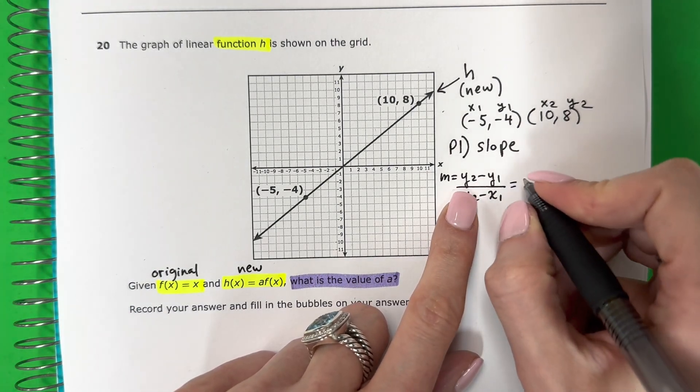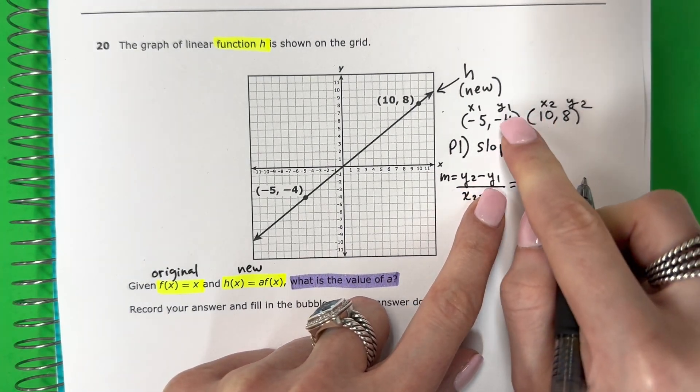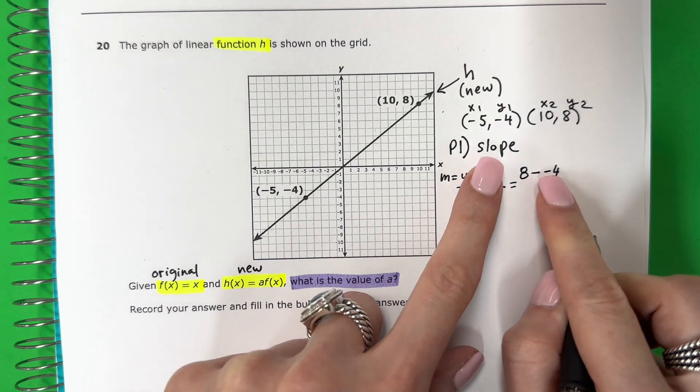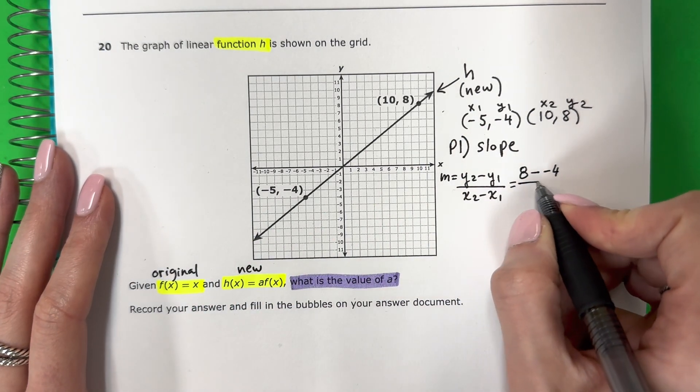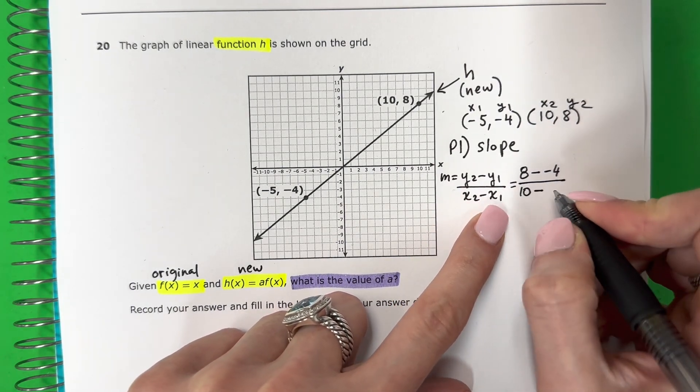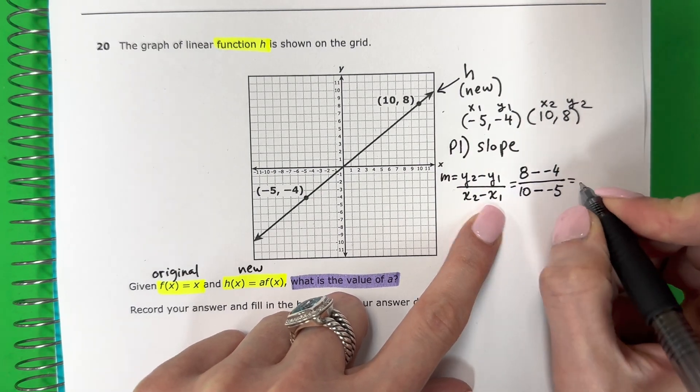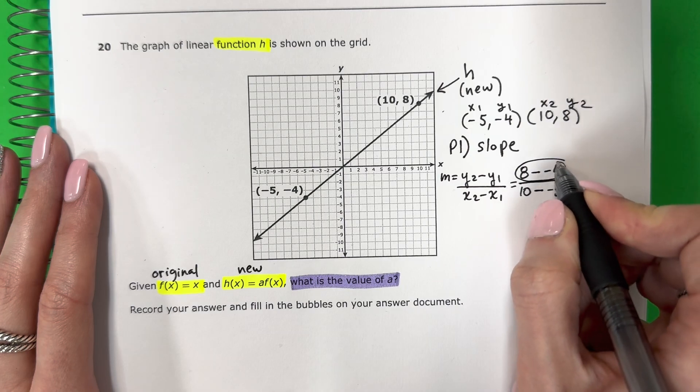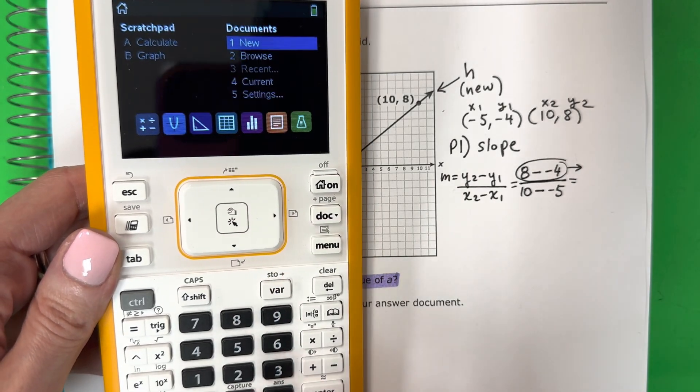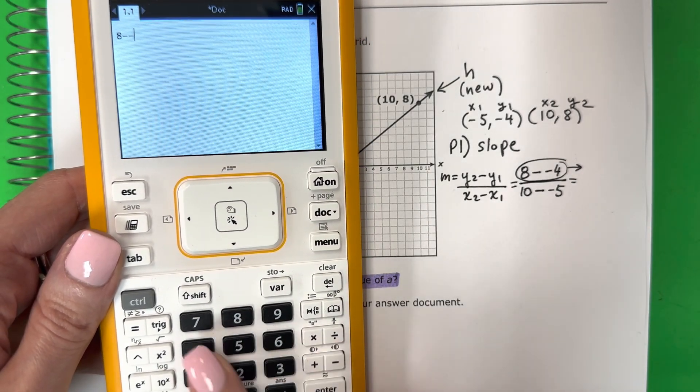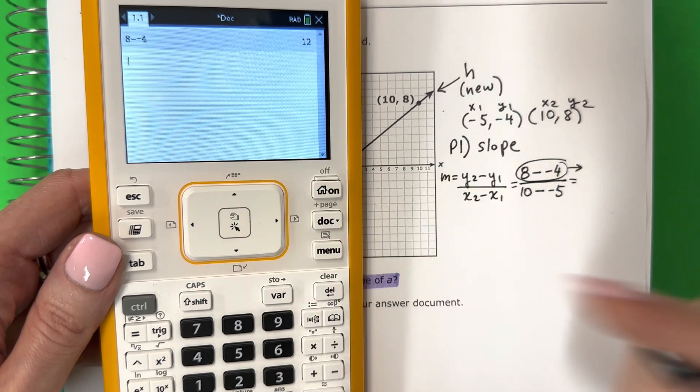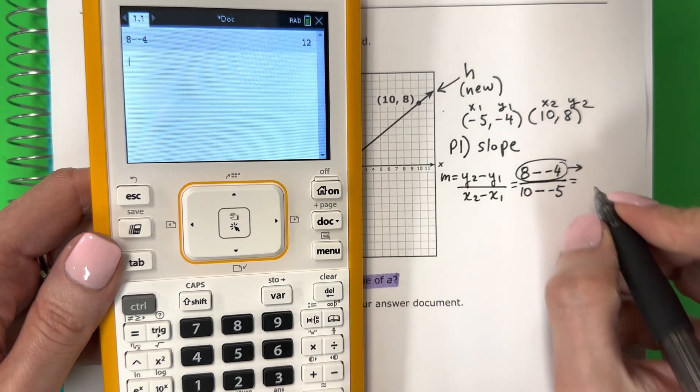Alright. Y2 is 8 minus y1 is negative 4. Put another one. Pon un otro negativo. One for the minus, uno por el menos, and one for the negative, y uno por el negativo. Divided by, entre, x2 is 10, minus x1 is negative 5. Let's go ahead and put that in the calculator. 8 minus negative 4. Okay, remember, minus negative is positive. Menos negativo es positivo. So it's 8 plus 4. It's 8 más 4, which is 12. 12.